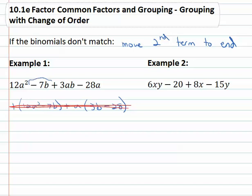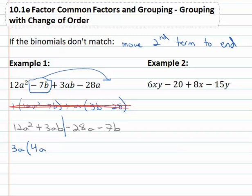Our plan B is going to be to grab this second term and move it to the end. It's going to give us a different grouping that we can play with. So we have now 12a² + 3ab, because the 7b is at the end now, - 28a - 7b. And now we'll split in the middle and see if this works better. On the left side, you'll notice they both have at least a 3 and an a in common. Dividing out the 3a from 12a² leaves us with 4a. 3ab divided by 3a leaves us with just the b.